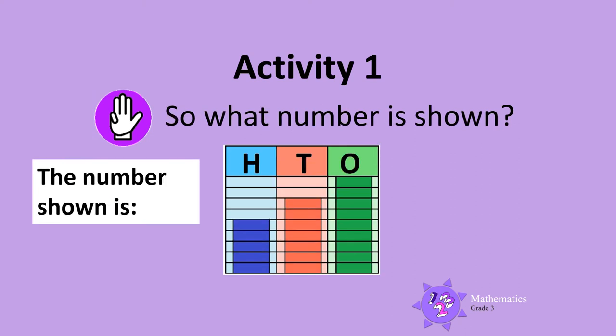So the number shown on this place value diagram is 500, add 70, add 9, which makes 579.